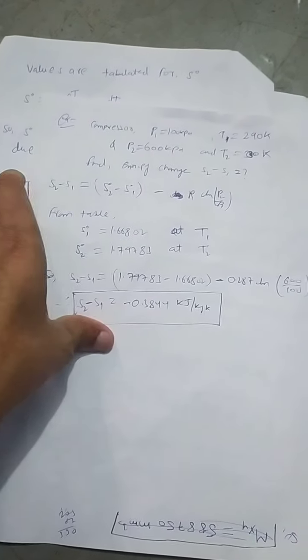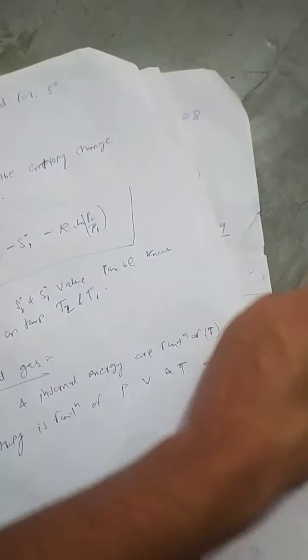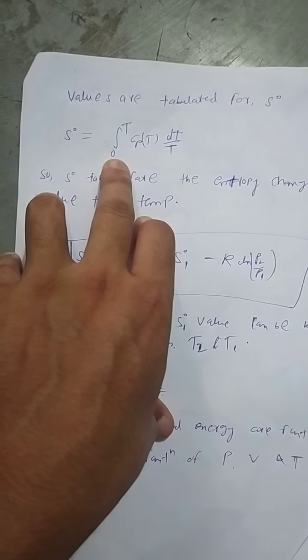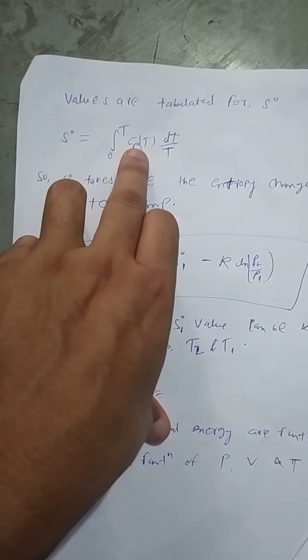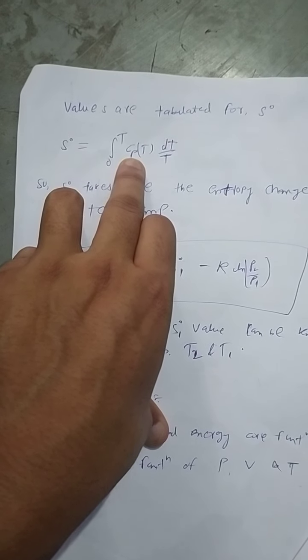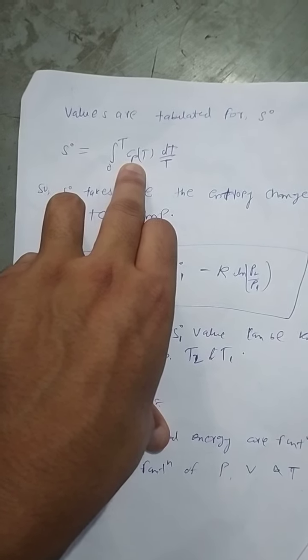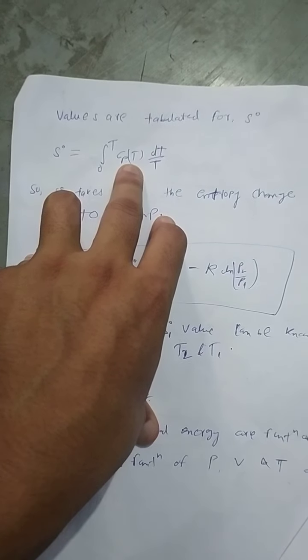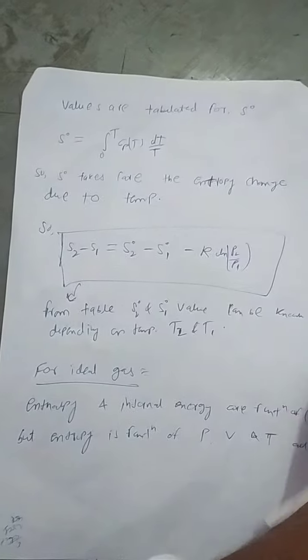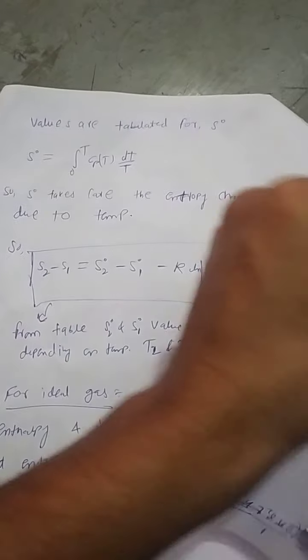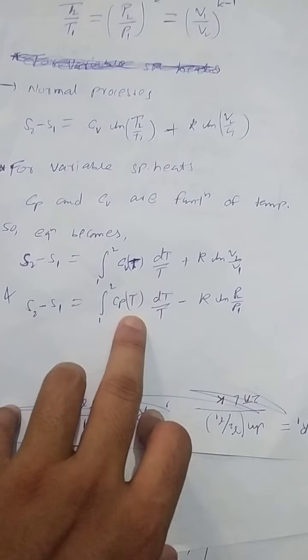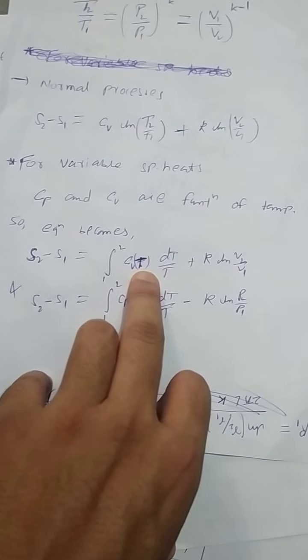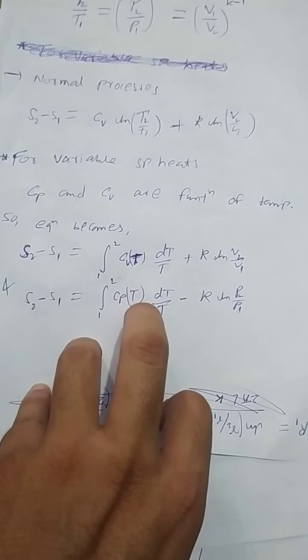And yes, one thing: this value is tabulated for specific heat at constant pressure as a function of temperature only, not for the other one. For this one it is tabulated, not for this one. It is not required, unnecessary to do it.